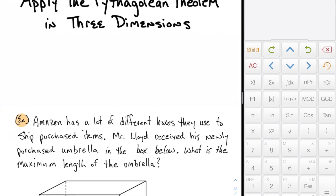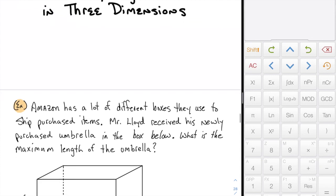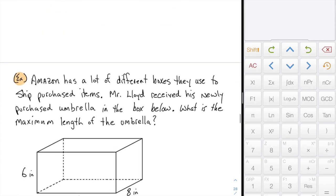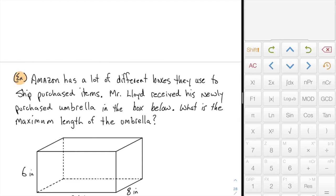But I have two examples here, and I'll show you both of them in case you're watching the video trying to get some hints. In this first question, Amazon has a lot of different boxes they use to ship purchased items. Mr. Lloyd received his newly purchased umbrella in the box below. What's the maximum length of the umbrella?